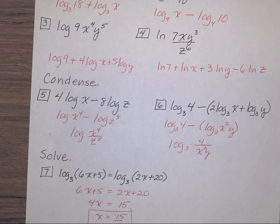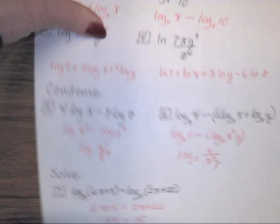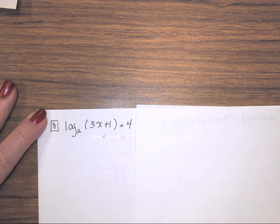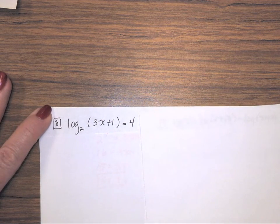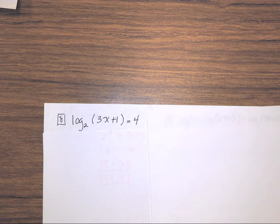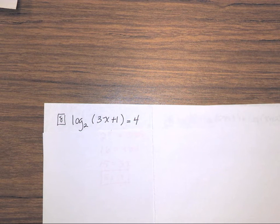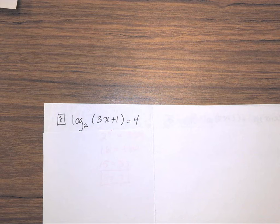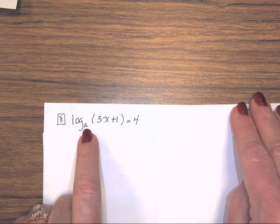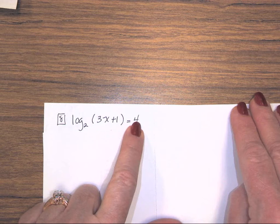Number 8. I have log base 2 of, in parentheses, 3x plus 1, close parentheses, equals 4. I'm going to choose to just change this to exponential notation. So my base is 2, raised to the power of 4, equals the 3x plus 1.